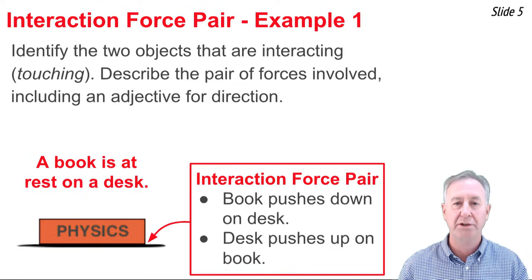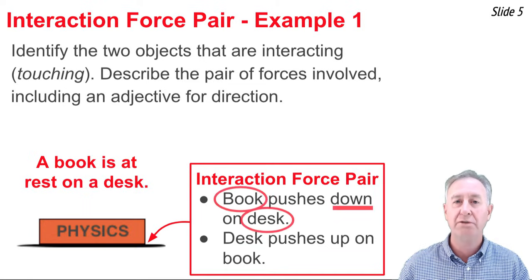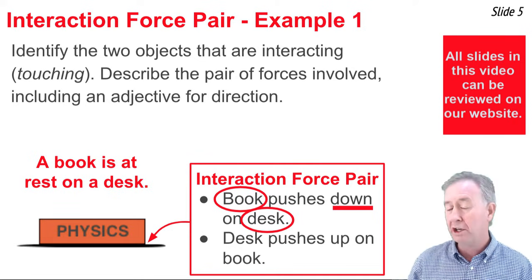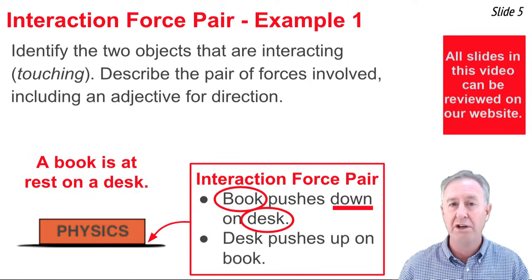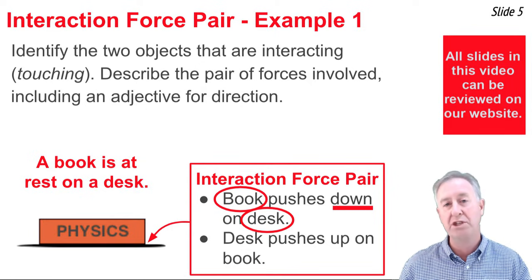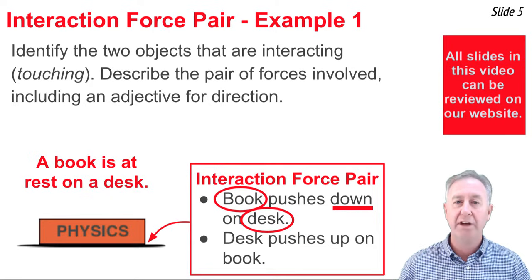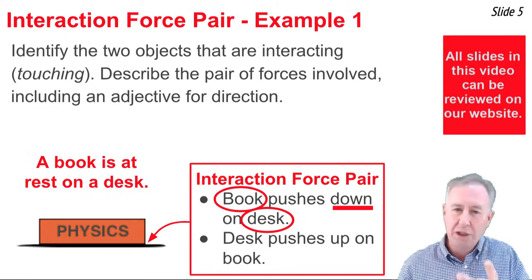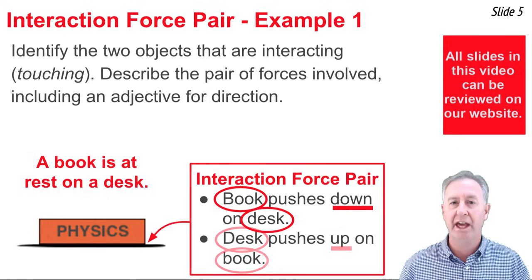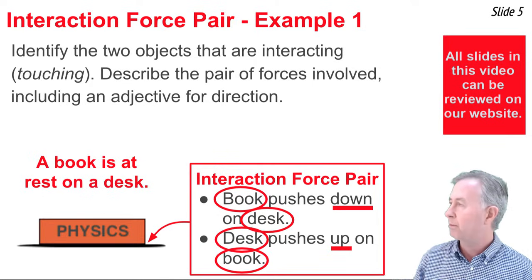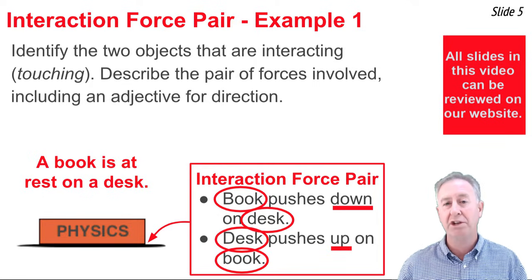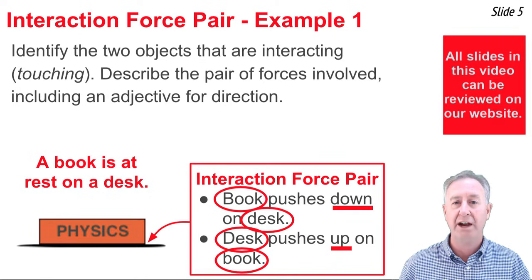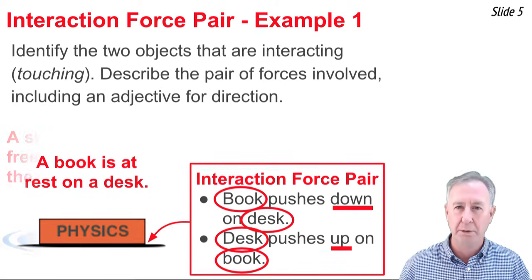In describing this force pair, you will notice that I have identified the two objects that are interacting — the book and the desk — and I have included a direction to describe the force upon the desk. So the book pushes down on the desk. Once I have done that, I can find the other force in the pair by taking the two nouns and switching them around in the sentence. The desk pushes up on the book. You will also notice that the adjective has become oppositely directed — it was down on the desk, but it's up on the book.